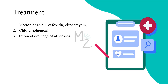Treatment: Bacteroides Fragilis is resistant to penicillin, first-generation cephalosporins, and aminoglycosides. The drug of choice is metronidazole, with cefoxitin, clindamycin, and chloramphenicol as alternatives. Antibiotic therapy is usually accompanied by surgical drainage of abscesses. Lung abscesses often heal without drainage.